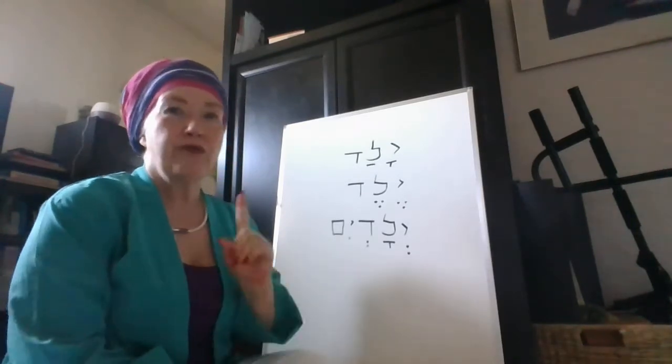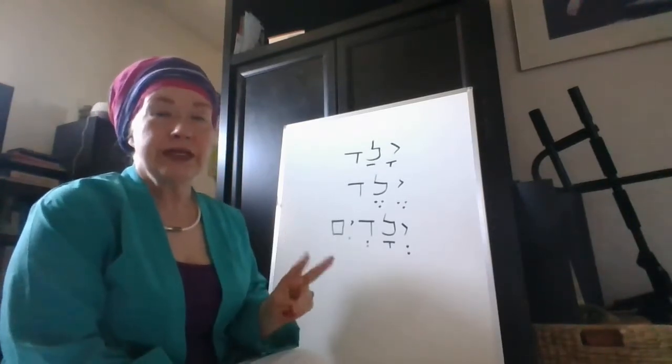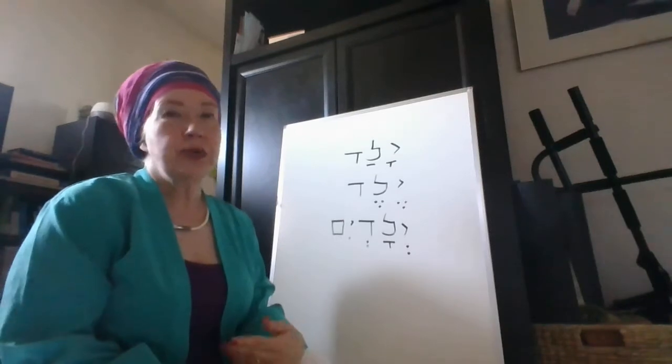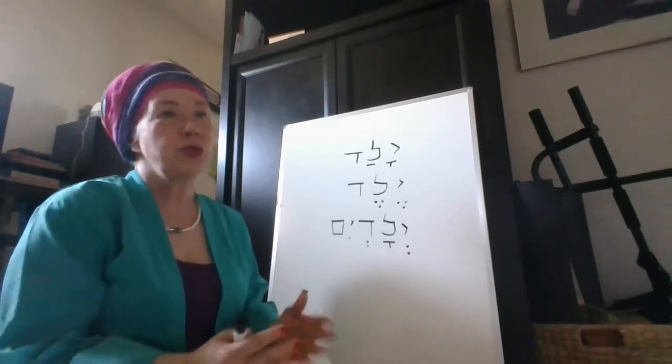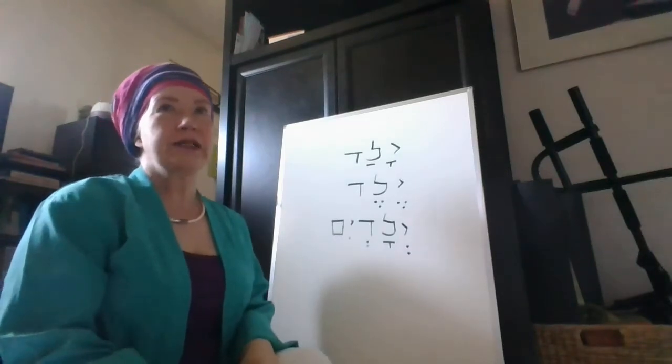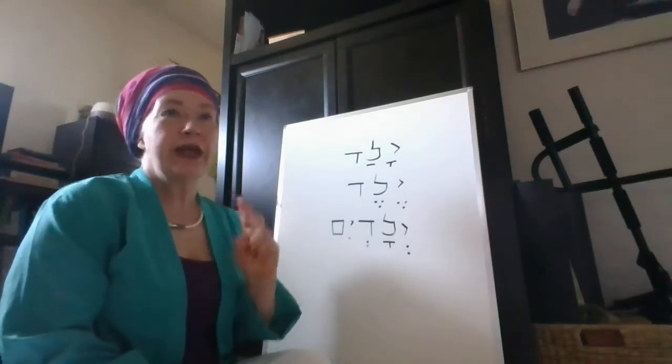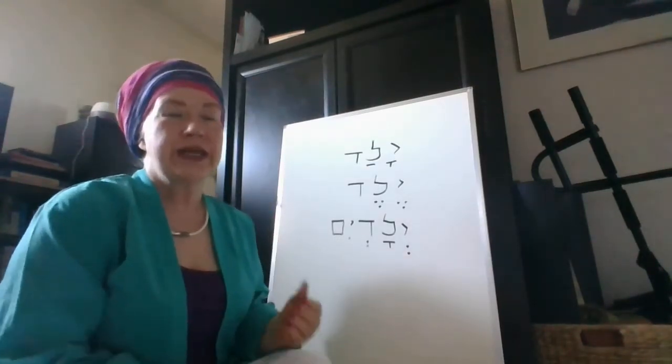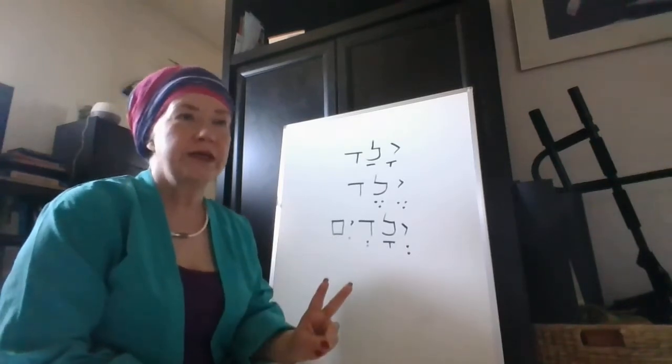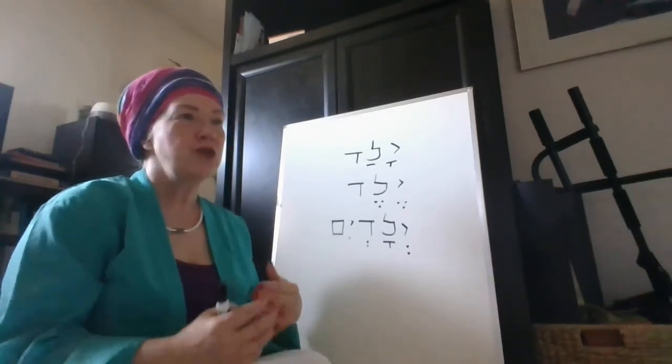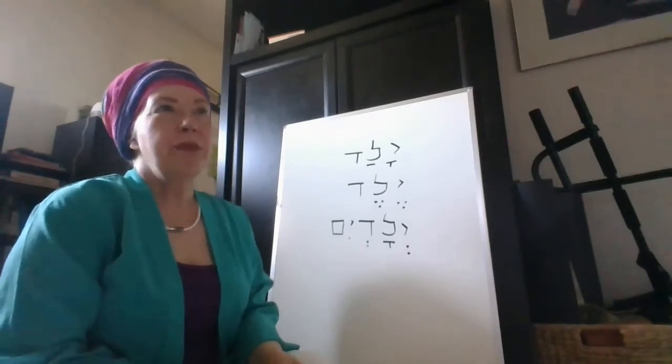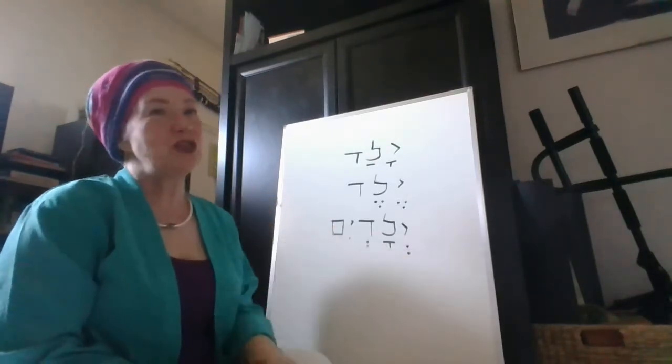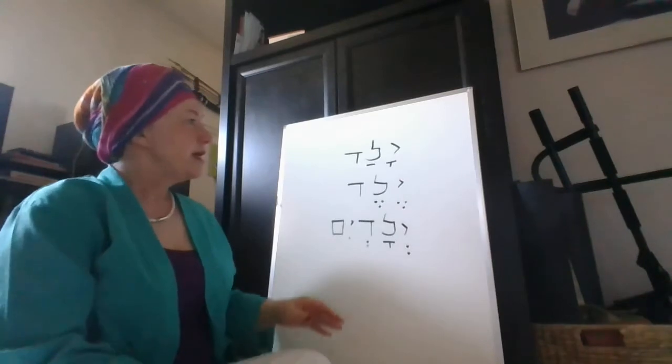For example, if you have one chair, if you make it plural into two chairs, you do not change the C-H to an S-H, the A-I sound to a U, and drop the R because it's a weak letter. You don't have one chair and two shoes. You have one chair, two chairs. Now, there are all those strange things like one woman, two women, one sheep, two sheep. We do have things that don't fit the rules, but we don't change the sounds on a regular basis. On a regular basis, you're going to be changing the vowels and the accents and the sounds in Hebrew.